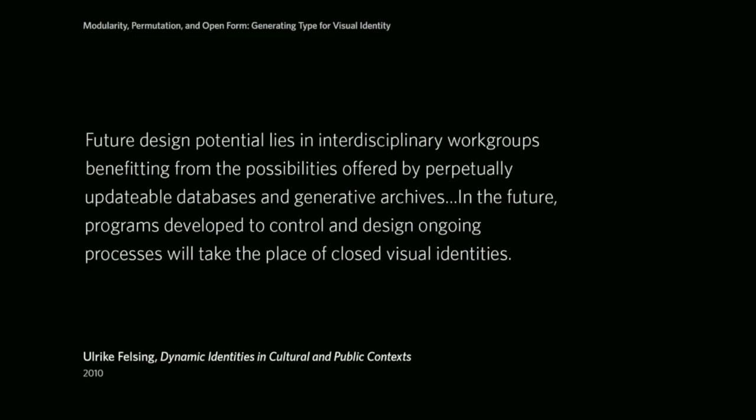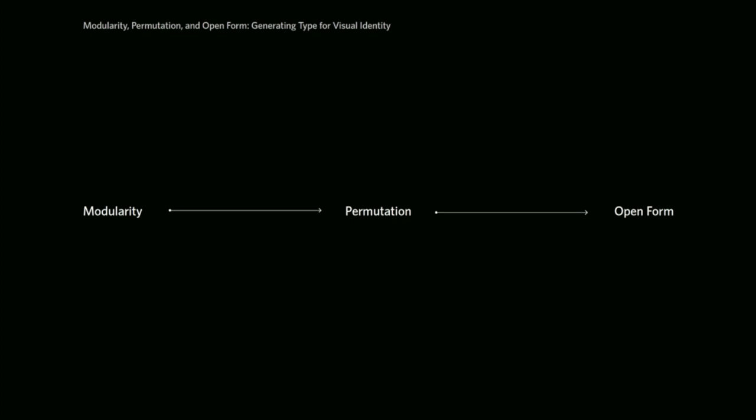Thinking more specifically about visual identity design, there's this notion that designers are going to be creating visual identities that have perpetually updatable databases and generative archives, rather than perhaps a minimum kit of parts that is turned over to the client. And so there are these three ideas I've come across — modularity, permutation, and open form. I see them as sitting on a continuum from something that's less complex to something that's more complex, and the three prototypes I'm going to show you today run the gamut from modularity to open form.